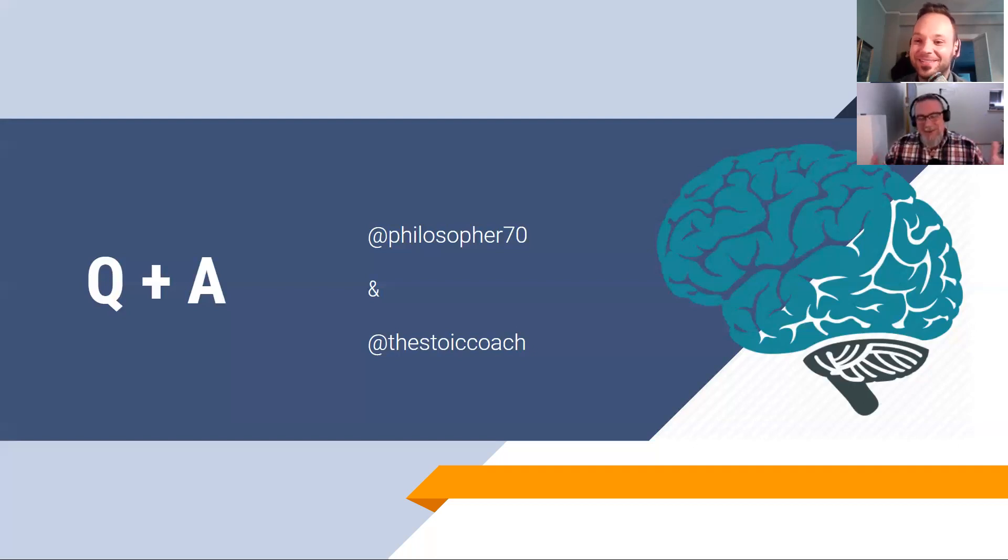So there's almost like there's four positions. There's the two extreme positions. This idea is totally useless. Let's get rid of it. This idea is absolutely great. And we have to go back to the ancient Stoics for every single thing. And then there's two moderate positions in the middle that I'd say Massimo represents one. And my approach is a more conservative approach.